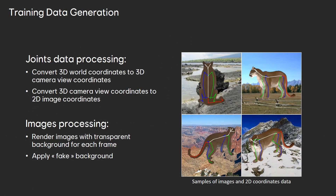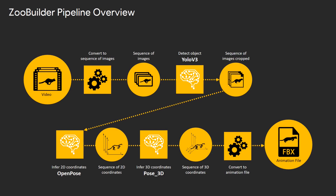We process the extracted data to generate the 3D view coordinates and the 2D image coordinates of the joints, as well as their corresponding images, to which we apply a random background. We use this synthetic data to retrain 2D and 3D pose models originally designed for humans. The models are integrated into an end-to-end pipeline named ZooBuilder that takes as input a video of a cougar and outputs the corresponding 3D animation.